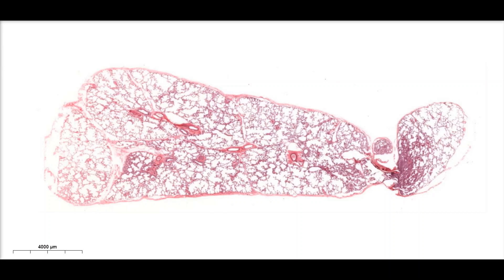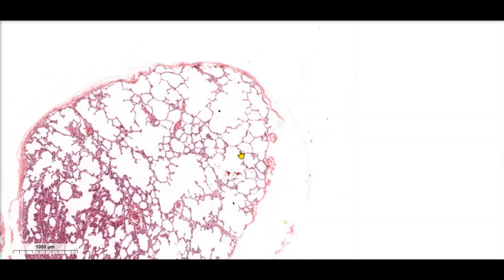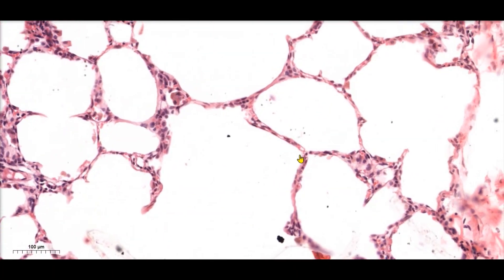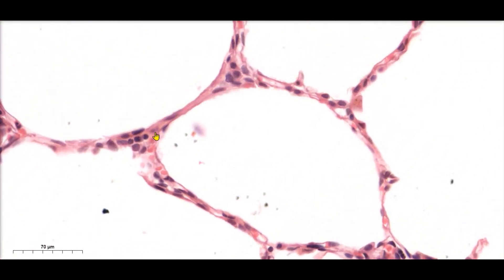To see simple squamous epithelium, we're looking at a lung slide. Here on the slide on our screen, we can see lung tissue. When we look at this organ, we notice all of these little white spaces — these are air pockets inside of the lung called alveoli. We're going to zoom in on an alveolus. As we zoom in, we can see that this individual air pocket is lined by a single layer of flat cells, which is why we call this a simple squamous epithelium.